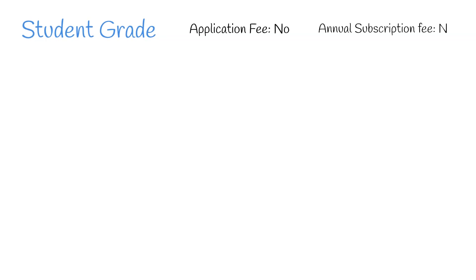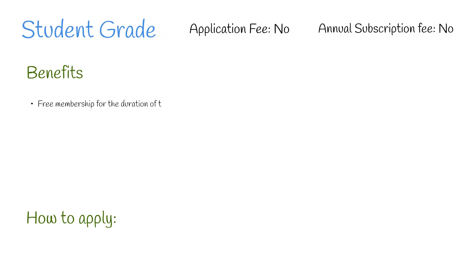Firstly, we have Student. This grade offers no designation for members and requires no application fee or annual subscription. This is for people who are already enrolled on a relevant course of study. Benefits to this grade include free membership for the duration of the course and eligibility to enter the CICES student prize and award scheme if on an accredited course.